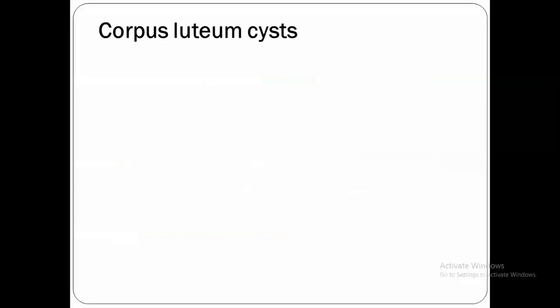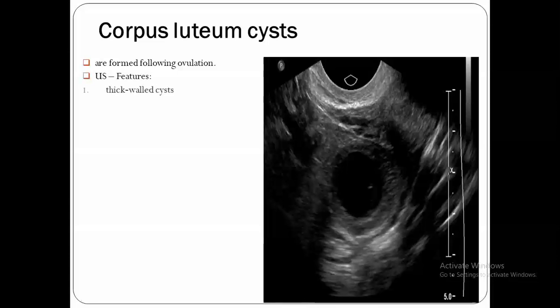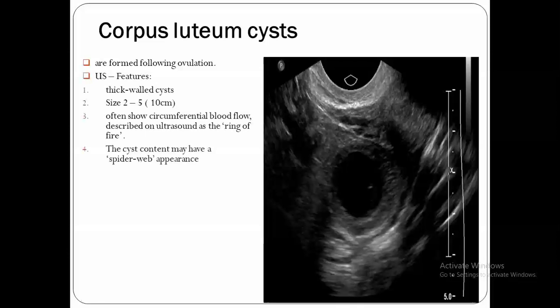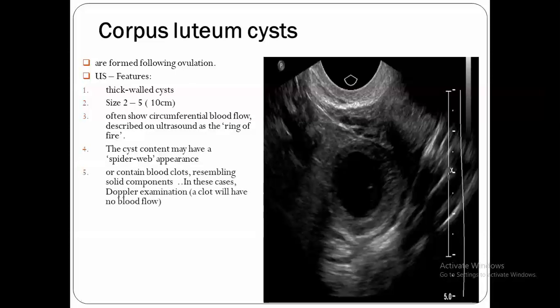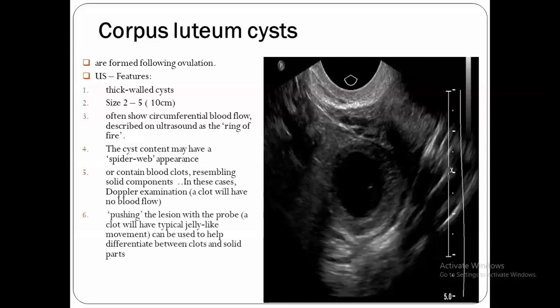Coming to corpus luteum cysts or corpus luteal cysts. They follow ovulation, so the usual time of presentation is after day 21 of the cycle, and complications also typically occur after CD21. On ultrasound, the wall is thicker than that of follicular cysts. The size is usually 2 to 5 centimeters but can reach larger sizes. On color flow Doppler, there is a ring of fire appearance, with the main differential diagnosis being ectopic pregnancy. Because of blood contents in the case of complication, there will be spider web appearances or a clot inside.